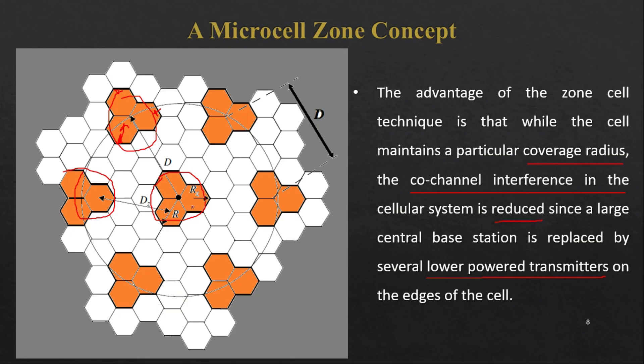The distance and power between co-channel cells is also reduced, so the microcell zone concept reduces co-channel interference as well. This covers all four concepts — prioritizing handoff, umbrella cell approach, cell dragging, and microcell zone concept. I hope you have understood these concepts clearly. Thank you so much for watching; don't forget to subscribe to this channel.